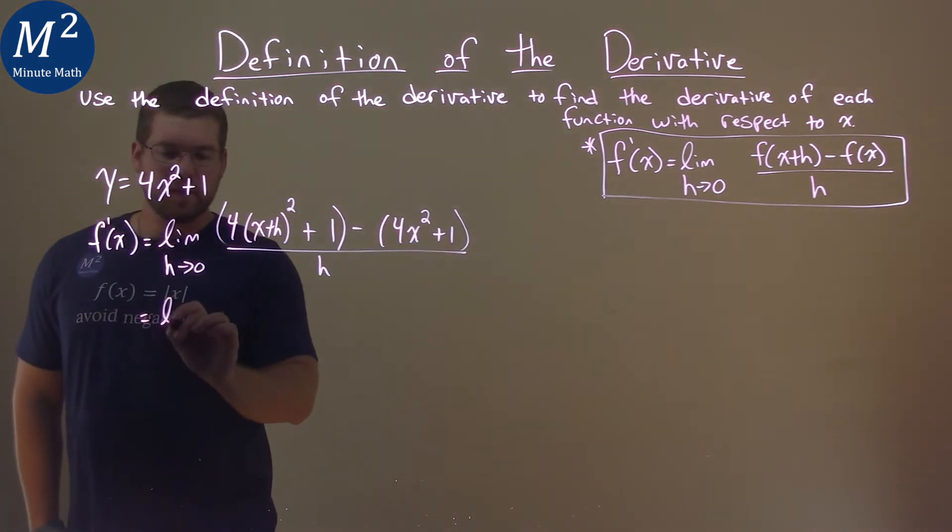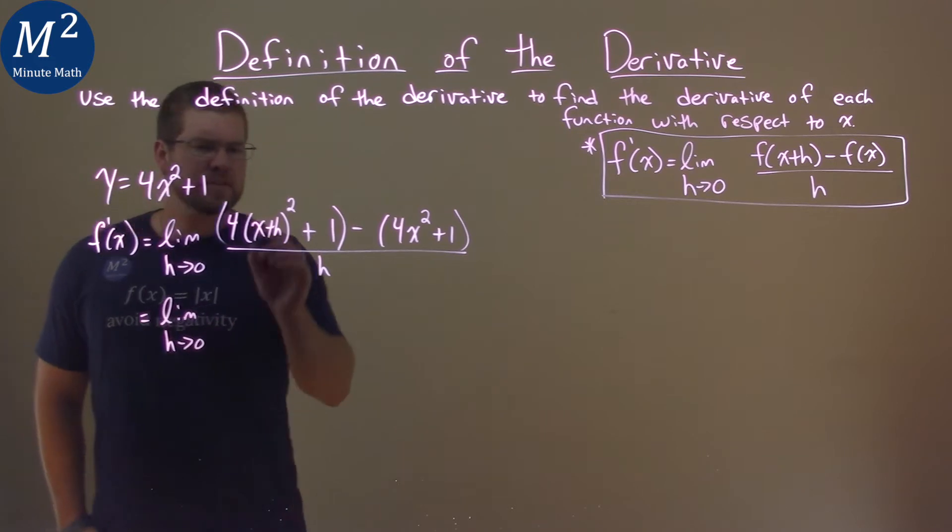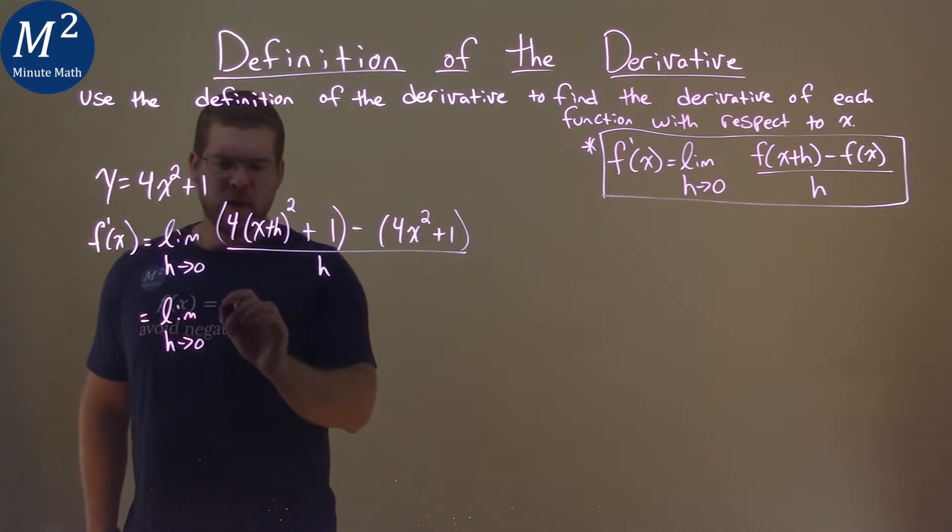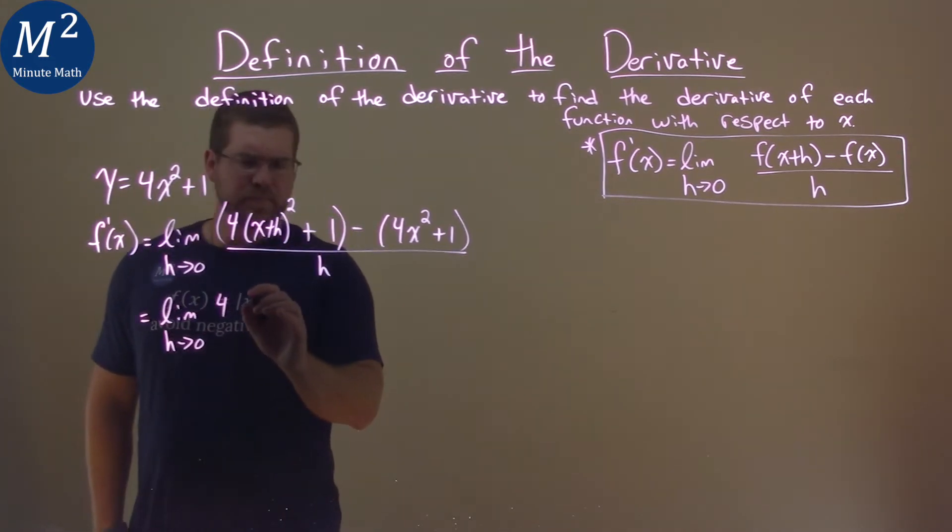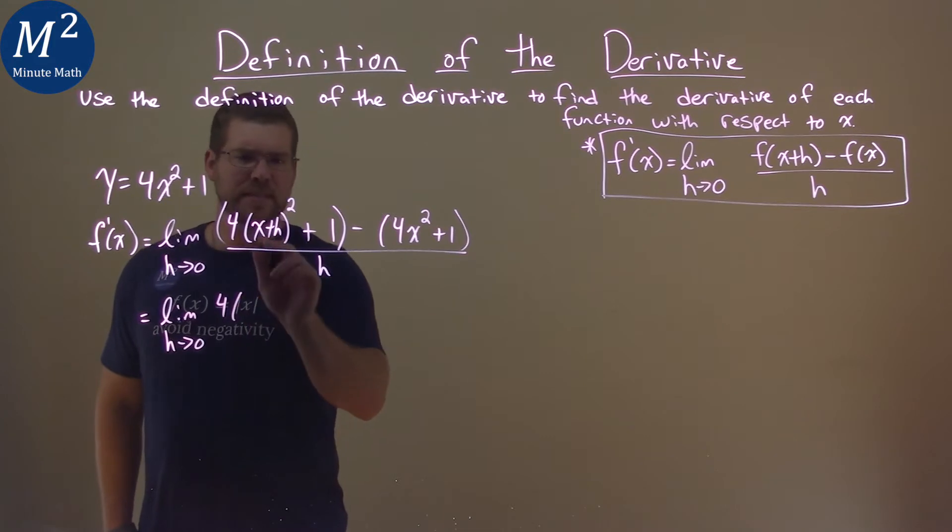So we have the limit here as h approaches zero. Now let's go simplify where we can. The 4 can stay out front and we have, well, what's this inside all squared?